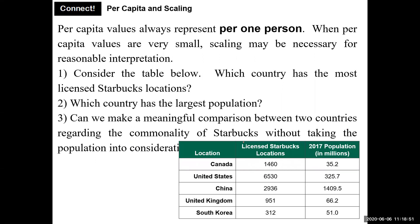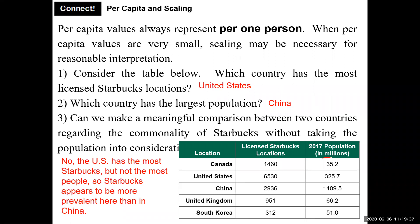Per capita values always represent per one person. When per capita values are very small, scaling may be necessary for a reasonable interpretation. Consider: which country has the most licensed Starbucks locations? Looking at the table with locations, populations in millions — the United States has the highest number of licensed Starbucks locations, while China has the largest population. We cannot make a meaningful comparison between countries without taking population into account — that is why per capita is important.